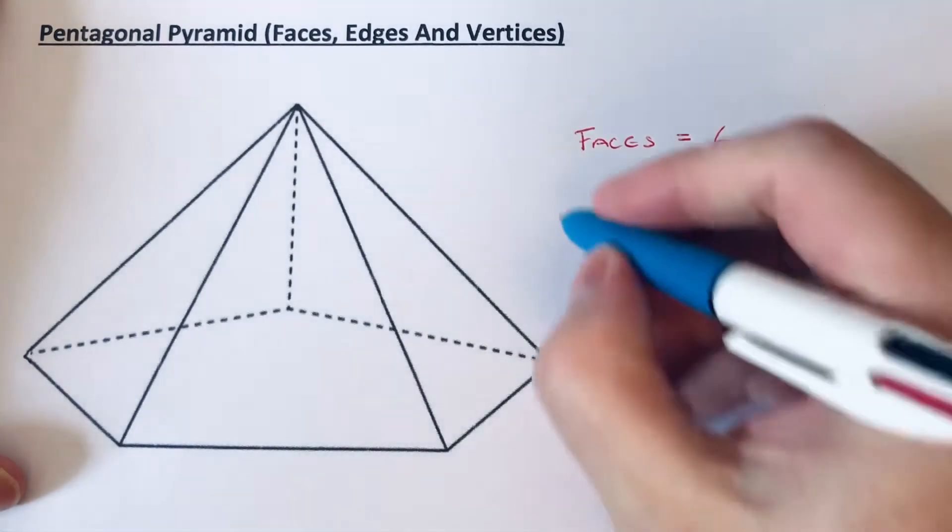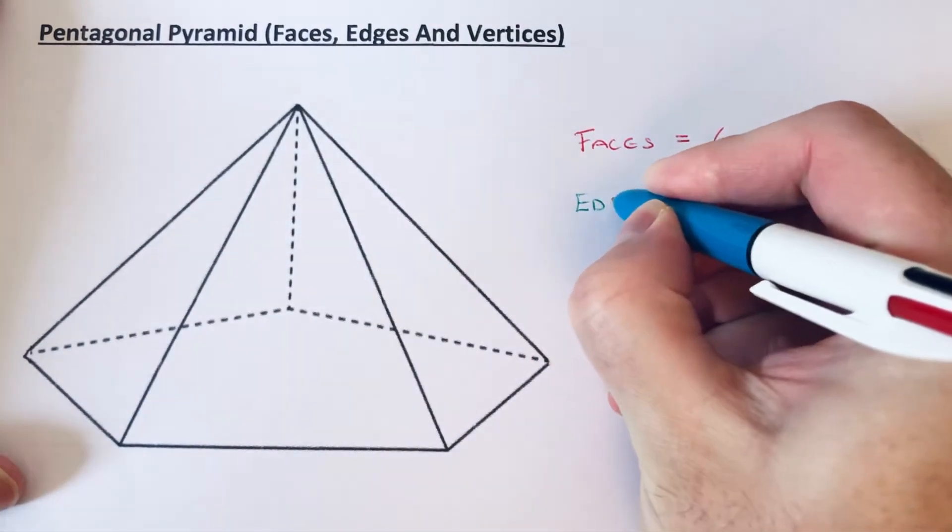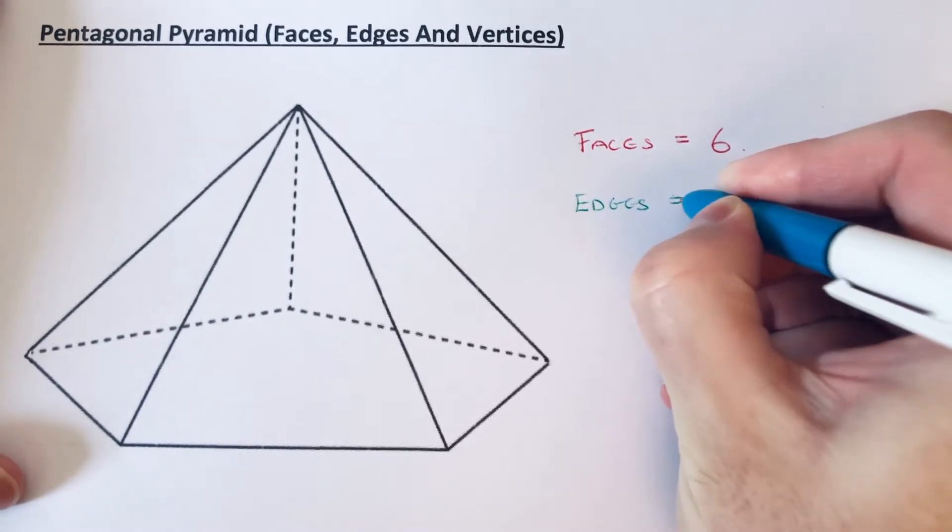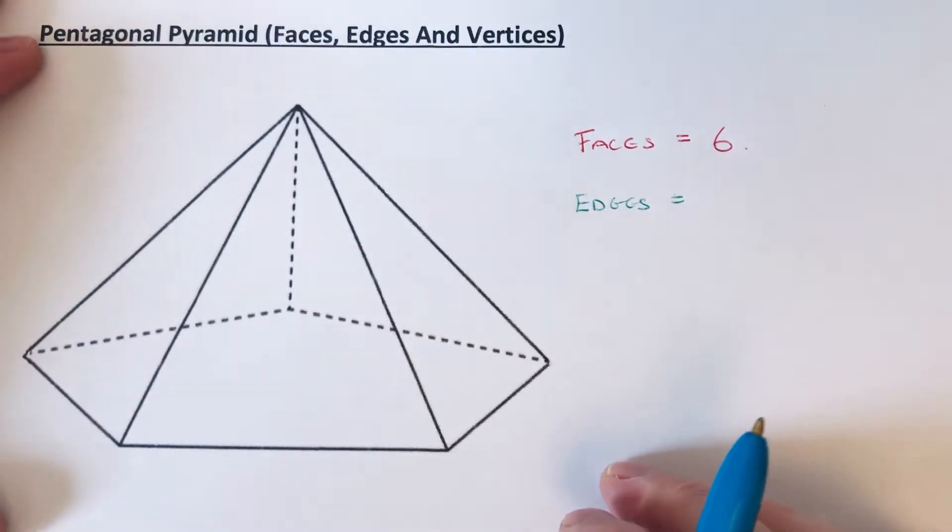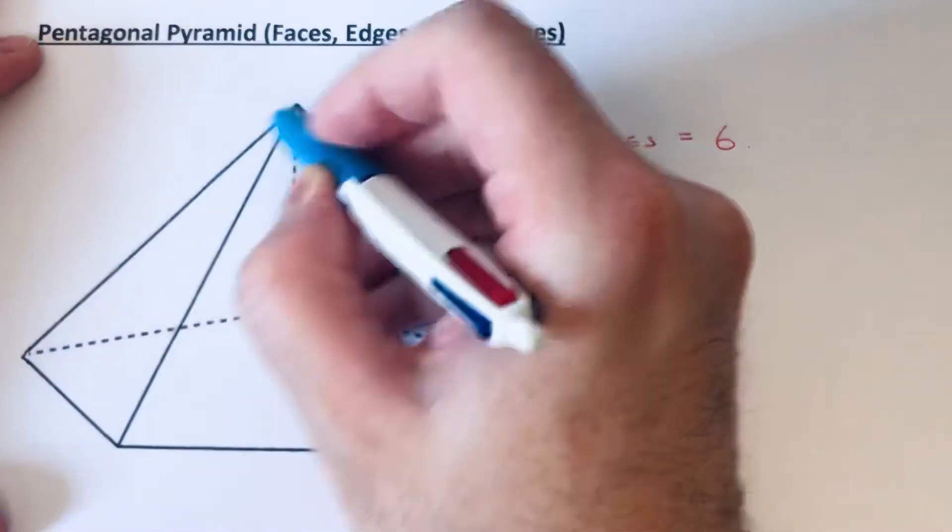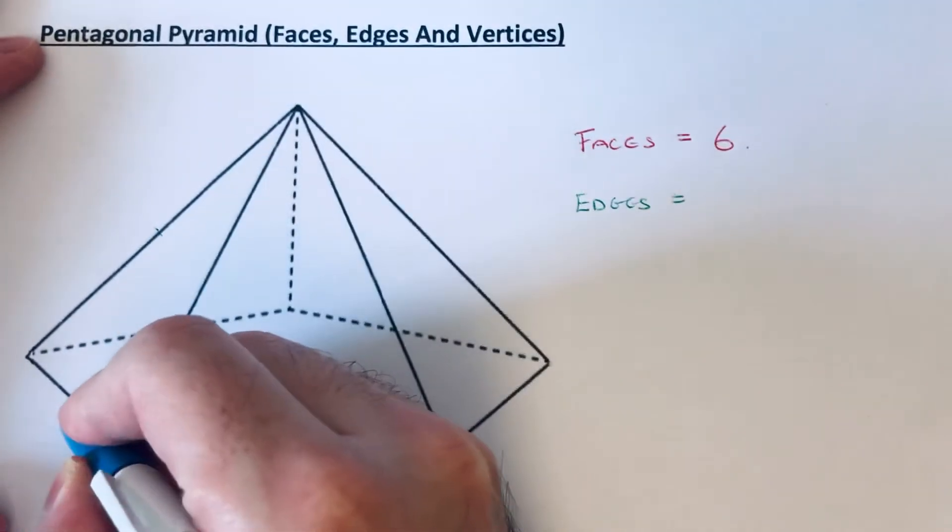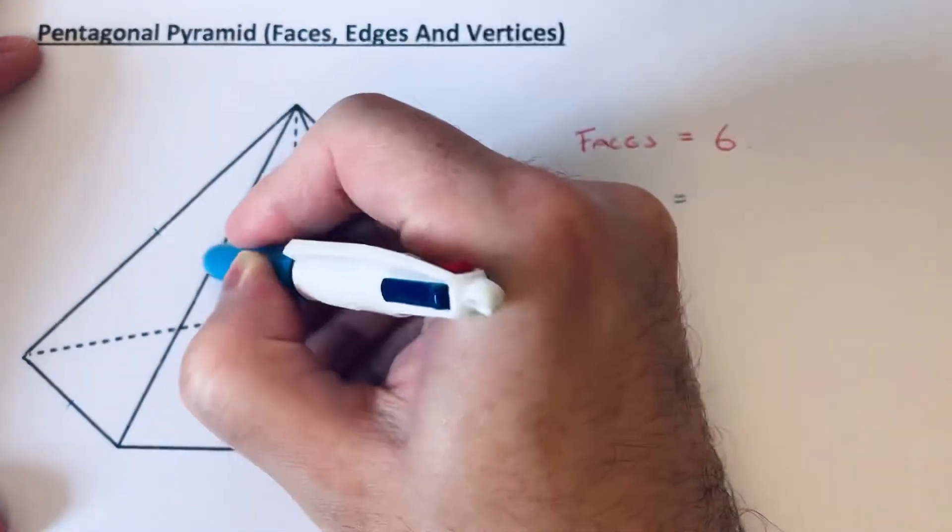Let's have a look at the number of edges next. The edges are the sides of the pyramid, so we basically just need to count how many lines there are. We've got one line here - that's one, two, three...